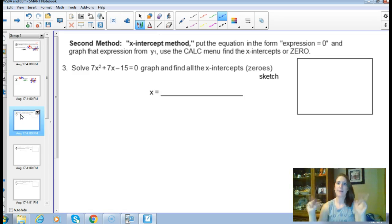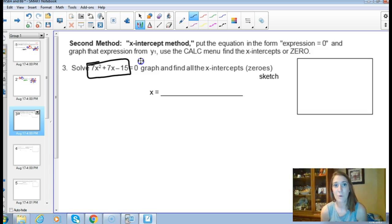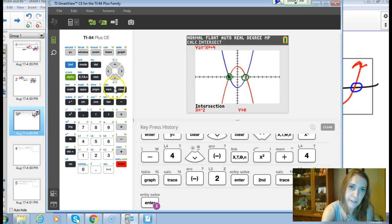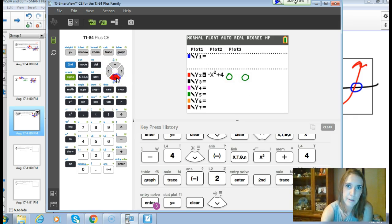The second method is the x-intercept method. If it's already set up where one side of the equation is 0, you don't have to do the intersect method. Some kids in the past decide they love the intersecting method, so they put y equals 0 into y2 and keep finding the intersection. That still works because y equals 0 is a function. But the other option is if it is in standard form ready to solve, you could type the function into y1 and find where it crosses the x-axis.